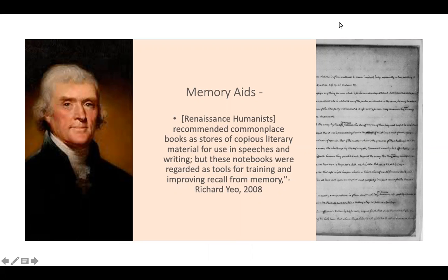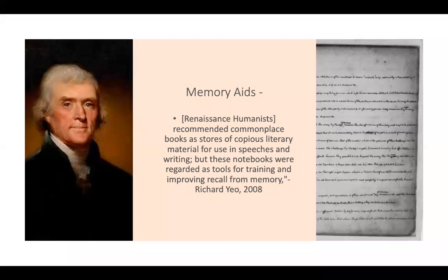Thomas Jefferson was a huge fan of commonplace books. He kept two during his life — one for literature and one for his legal studies. In his legal commonplace book, he would write down important quotes from legal texts he was reading and then engage with them at the bottom to think through them. These commonplace books would actually help him prepare for court cases when he was a lawyer.